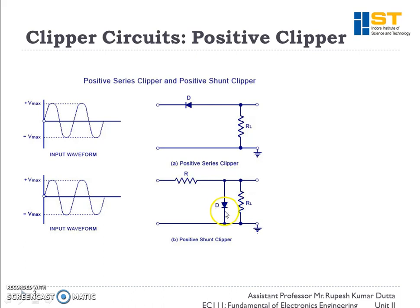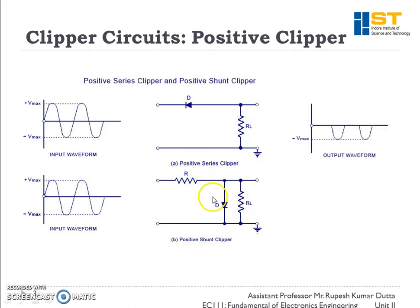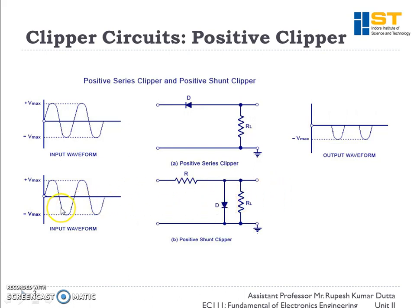In a shunt circuit, the behavior is opposite to the series circuit. When the diode is forward biased, it becomes short — all signals pass through the diode path and no signal reaches the load, since current follows the path of least resistance. When the diode is reverse biased, it is open and all signals pass to the load.